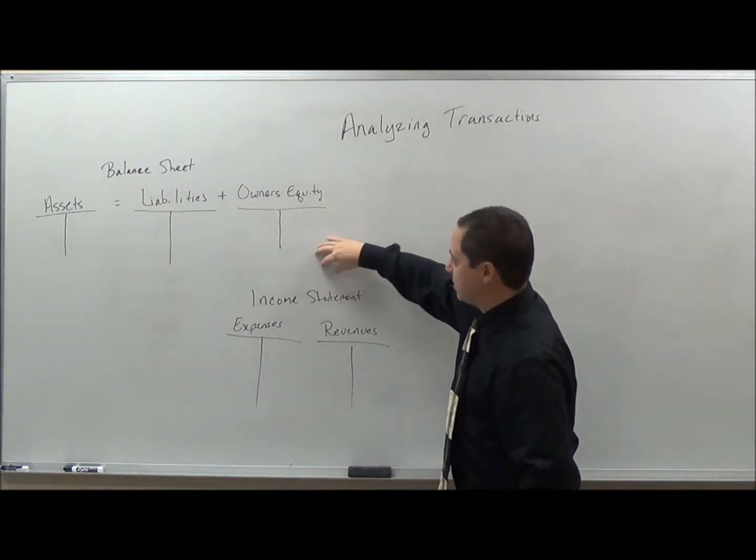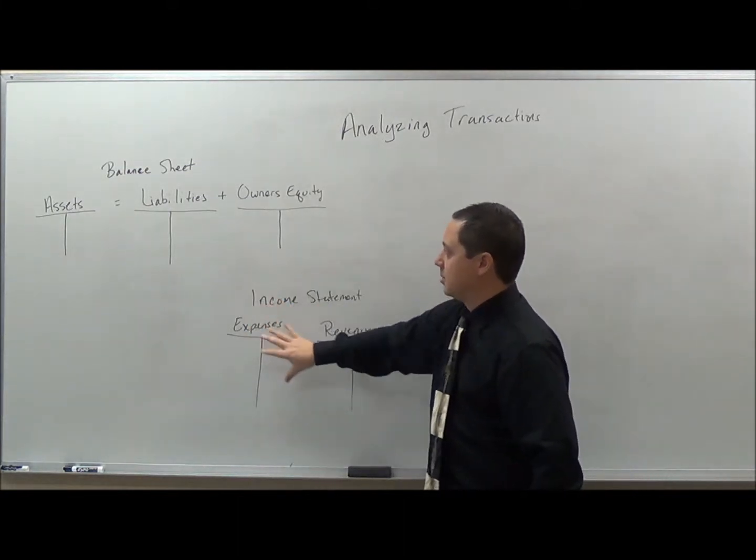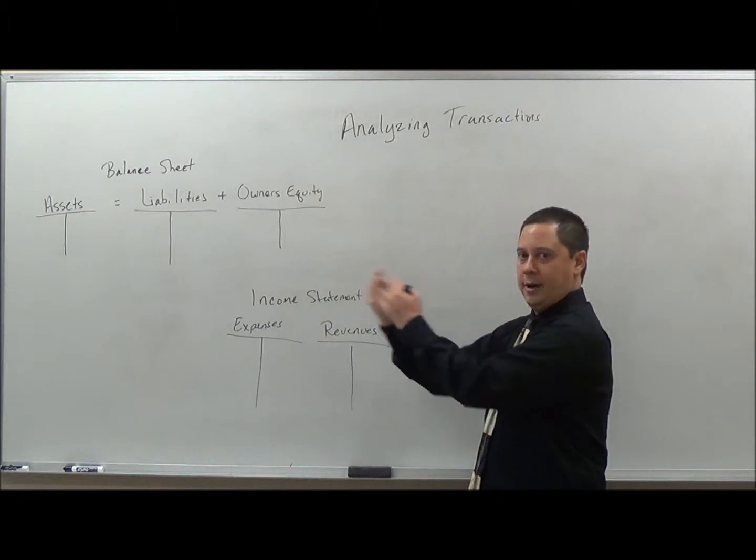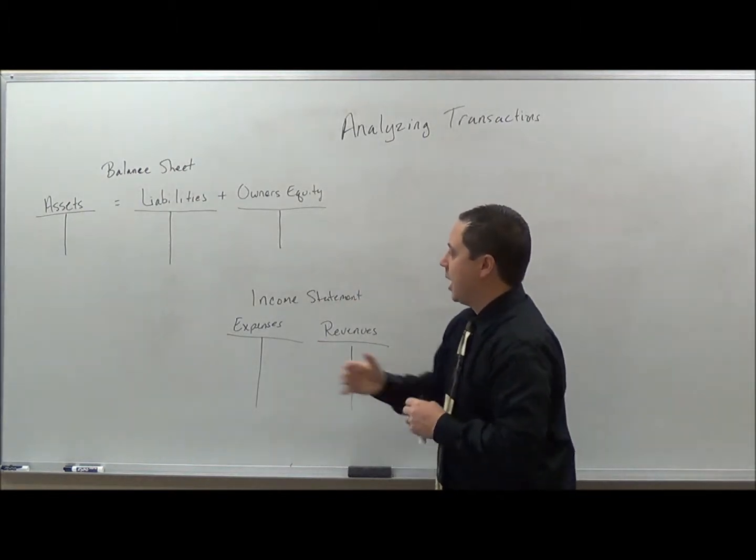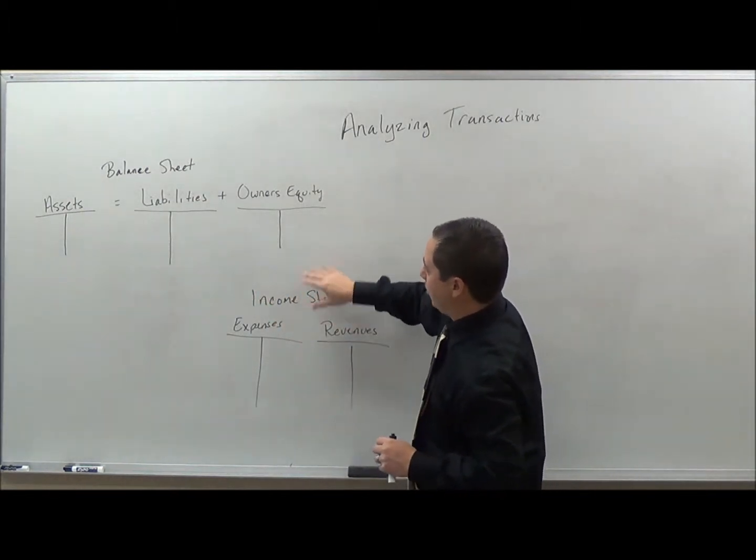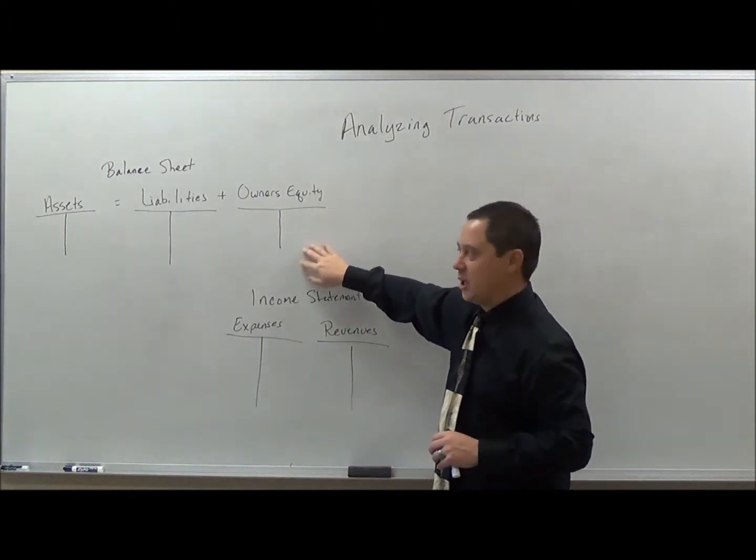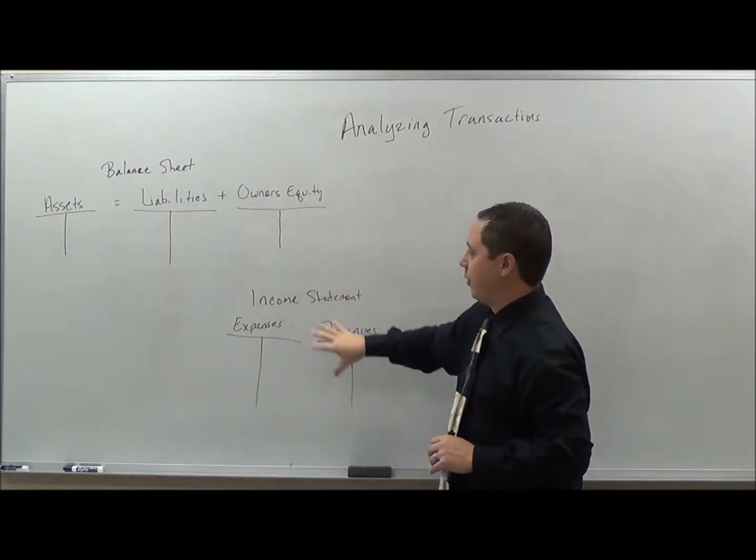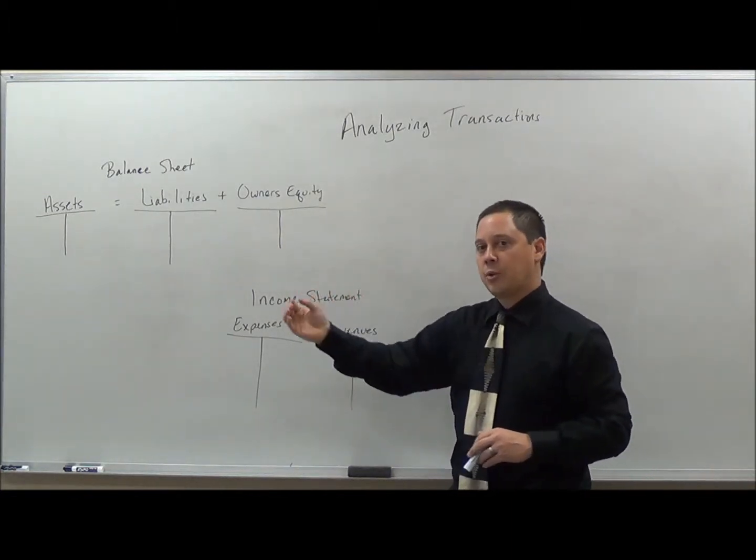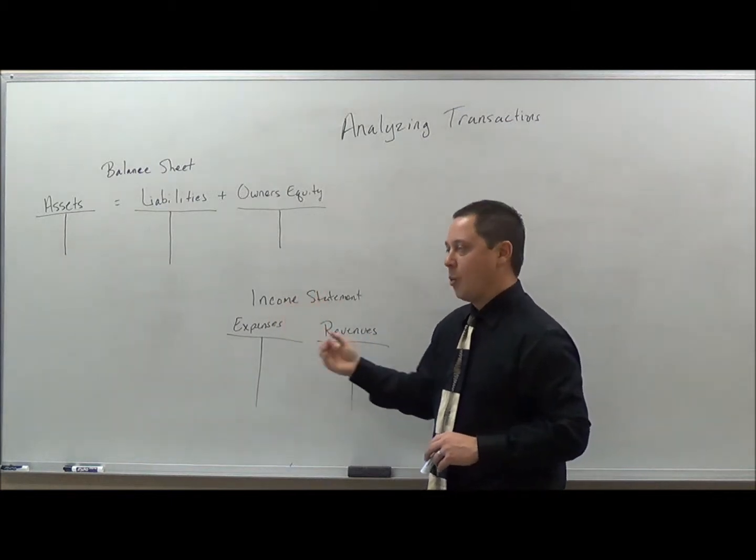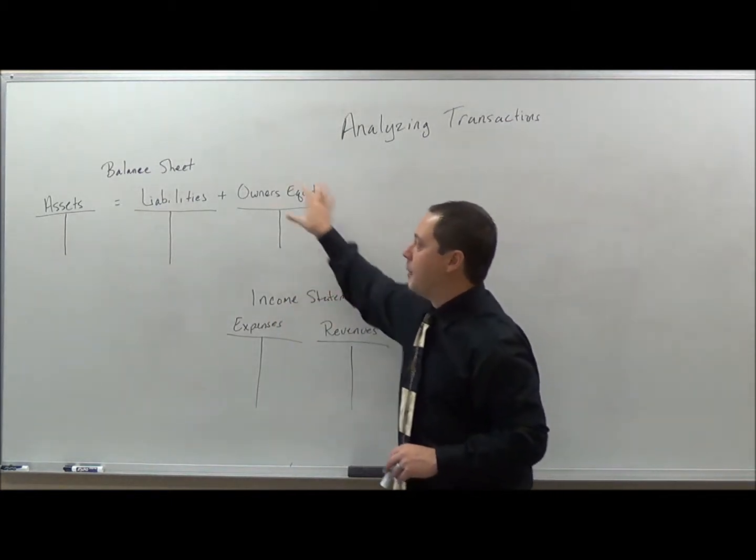Also in here I have the income statement. If you'll notice, the income statement is on this side of the equal sign because it falls into the owner's equity and feeds into the owner's equity section. So when we use debits and credits, I want you to realize what it means to the overall balance sheet.